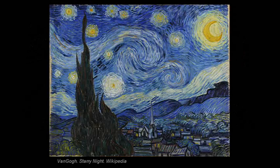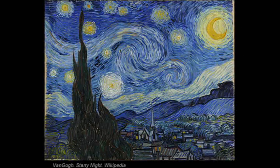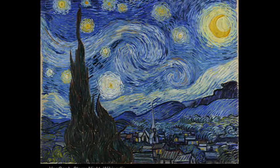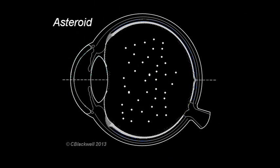Before we finish, I want to mention an interesting side subject. About one in a hundred people have something called asteroid hyalosis, or stars in their eyes. The stars are crystals floating in the vitreous. Why are they there? No one knows for sure.